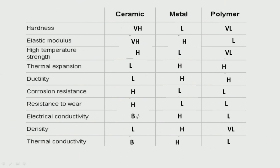Resistance to wear is again very very high for ceramics. Electrical conductivity may vary — ceramics can have conductive or non-conductive properties. Metals are high and polymers low. Density is very low for ceramics, metals are high, polymers very low. Thermal conductivity can go up or down just like electrical, metals will be high, polymers will be low. This table gives a very nice comparison between all three major classes of biomaterials.